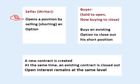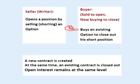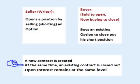Likewise, if a seller sells a contract — in other words shorts to open — and the buyer of the contract is closing out an existing short position — in other words buying to close — one trader created a new contract while at the same time the other trader closed out an existing contract, so it offsets and Open Interest remains the same.